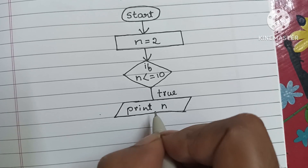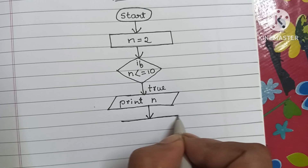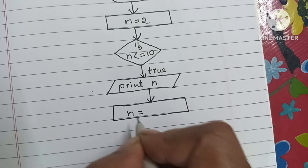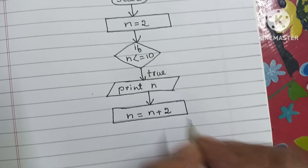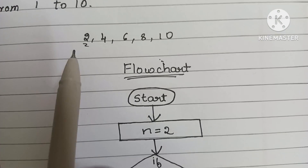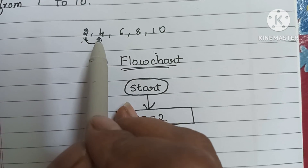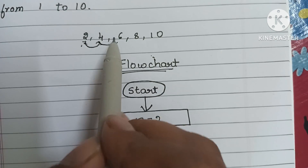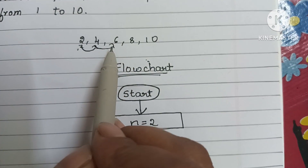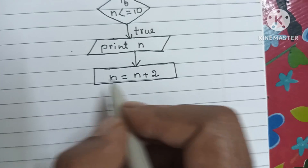Next, we have to add n by 2 — that is, n is equal to n plus 2. Our initial even number is 2; the next even number is 4. To get from 2 to 4 we add 2. To get from 4 to 6 we add 2. So here we have to add n is equal to n plus 2.